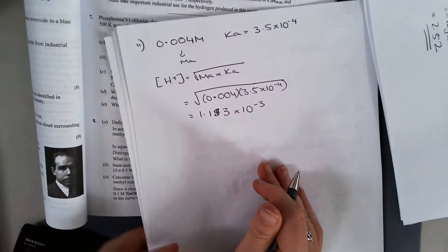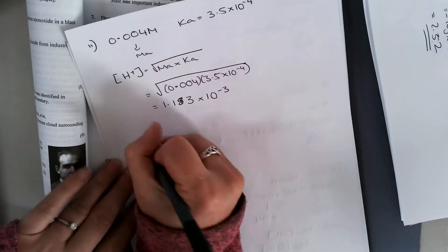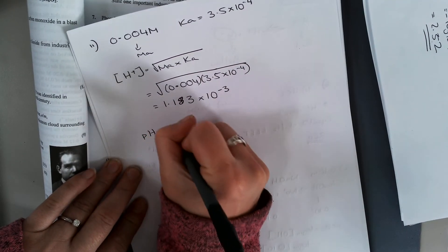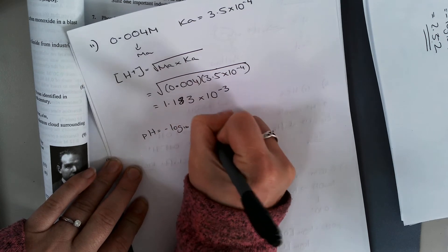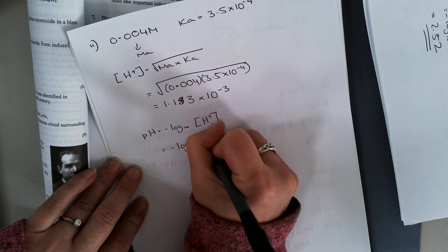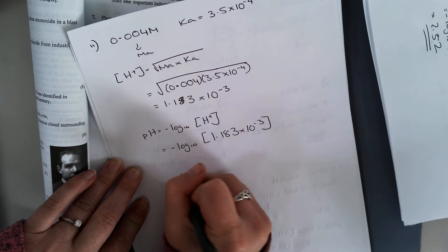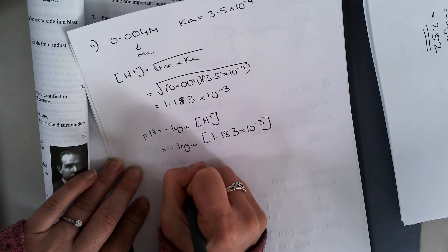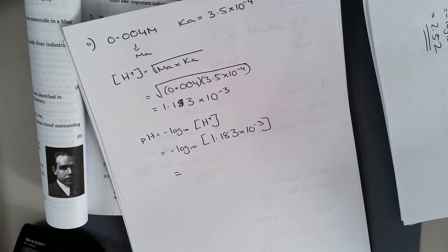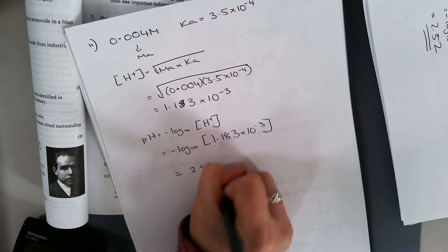I'm asked to calculate the pH. pH equals minus log to the base 10 of my H plus ion concentration. Minus log to the base 10 of 1.183 by 10 to the minus 3 gives an answer of 2.92.